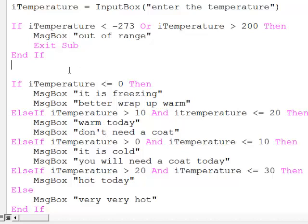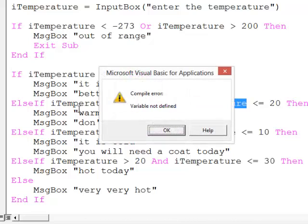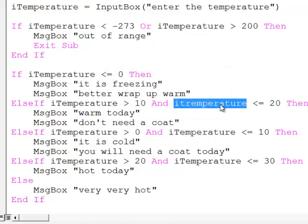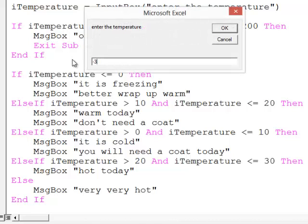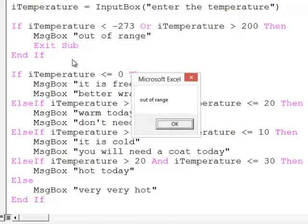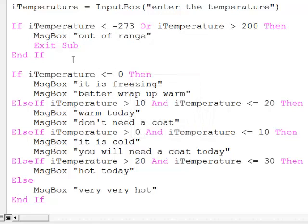So let's give it a quick try. Oh, spelling mistake. Let's sort that out first. Reset the project. So I'll enter minus 300. That's out of range and the program comes to an end.